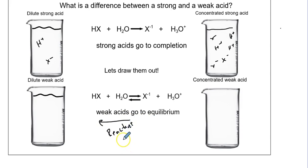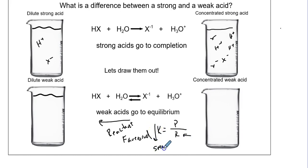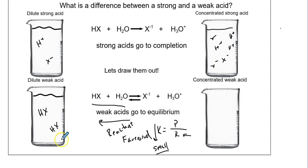In this case, whenever we track this, the K value is a ratio of the products over reactants. Since there are lots of reactants, we have a very small K value - lots of reactants, very little product. We might even show it like this. When you see how small the product is, you realize why we don't show them.